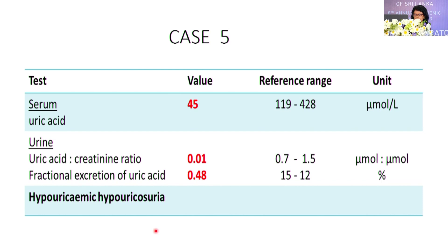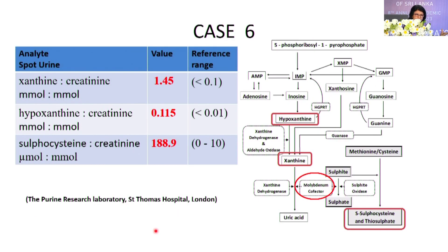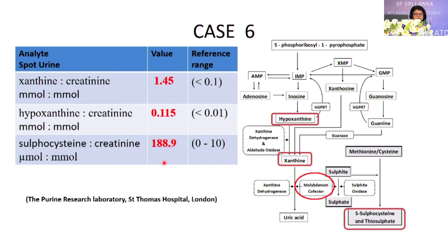If you see a low uric acid report, you can liaise with the ward and get a urine sample to do uric acid to creatinine ratios, or calculate the fractional excretion of uric acid using only uric acid and creatinine in blood and urine. This condition is called hypouricemia with hypouricosuria. This is the purine pathway where the defect is in the molybdenum cofactor for two enzymes — xanthine dehydrogenase and sulfite oxidase. When xanthine dehydrogenase is absent, xanthine and hypoxanthine accumulate producing low uric acid. When sulfite oxidase is deficient, sulfites accumulate and are converted to sulfocysteine, which is very neurotoxic — that's why the child presented with intractable seizures not responding to anti-epileptics. A purine research lab in London helped confirm this free of charge, and later genetic studies verified it.